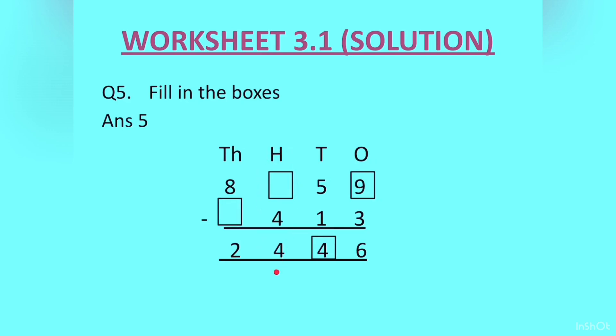After that in the hundreds column we have dash minus 4 is equal to 4. So we will add both the 4's, that gives us 8. Then in the thousands column we have 8 minus dash is equal to 2. So we will subtract this 2 from 8, which will give us 6. You can cross check: 8 minus 6 is 2.